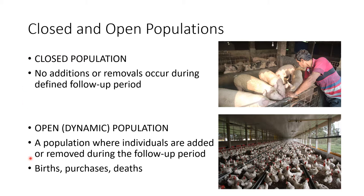On the other hand, you have your open or dynamic population, wherein individuals are continuously added or removed during the observation or follow-up period. For example, in a poultry flock, some die due to illnesses, undernutrition, and other reasons. In a broiler farm, around 2–3% mortality rate is still accepted. The additions or removals may be due to births, purchases, or deaths.